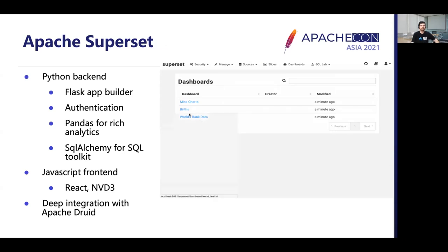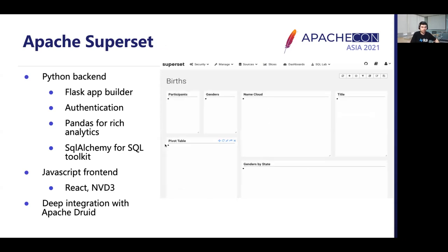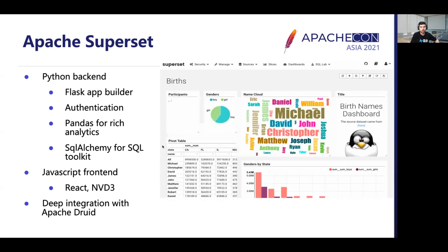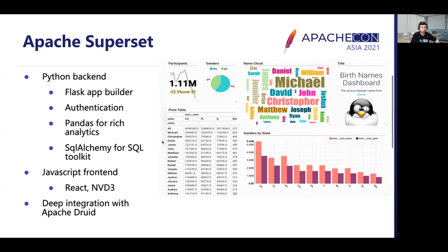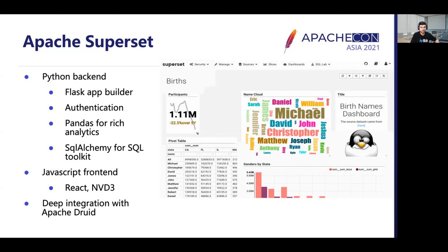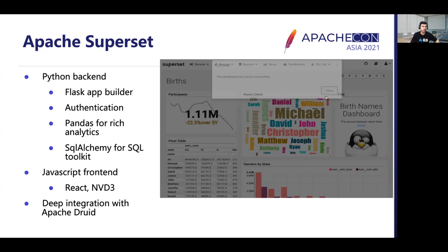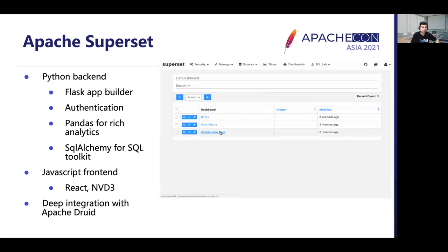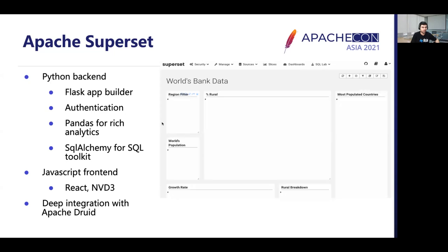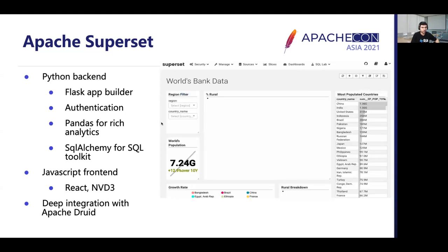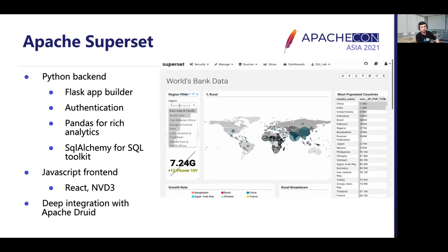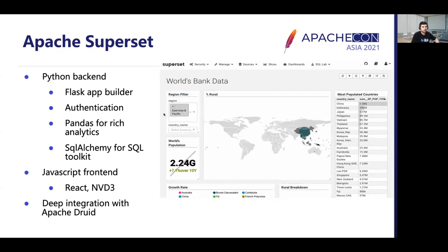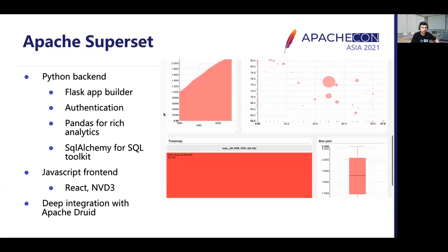For the visualization layer, I'm proposing Apache Superset. Apache Superset is a modern enterprise-ready business intelligence web application that is fast, lightweight, and intuitive, with options that make it easy for users of all skill sets to explore and visualize their data. Apache Superset is based on a Python backend using Flask App Builder, uses SQLAlchemy for its SQL toolkit, has a frontend created in JavaScript and React, and has deep integration with Apache Druid.